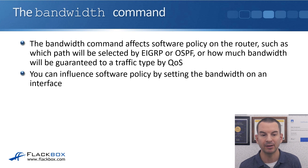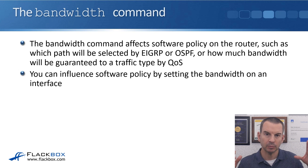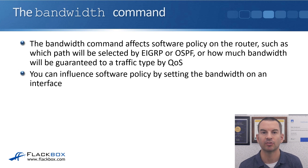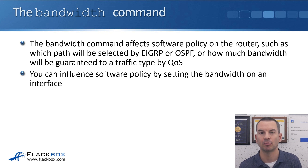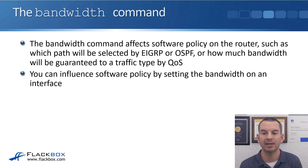The bandwidth command also affects how much bandwidth will be guaranteed to a traffic type by QoS. For example, if you've configured a QoS policy which is going to guarantee your video traffic a third of the bandwidth on an interface, the way that you tell the router how much bandwidth is actually there is with the bandwidth command. So you can influence software policy by setting the bandwidth on an interface.